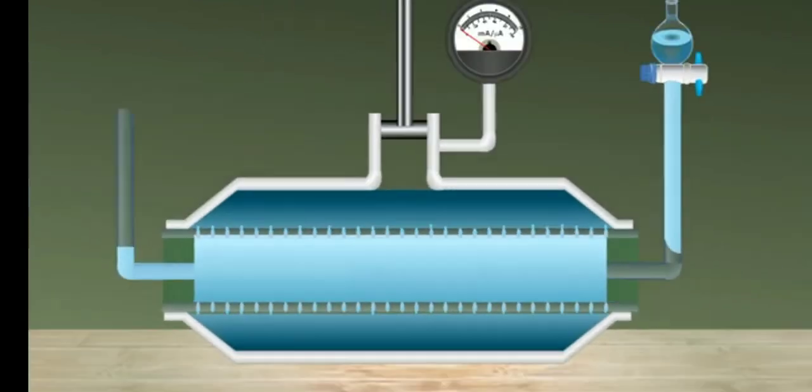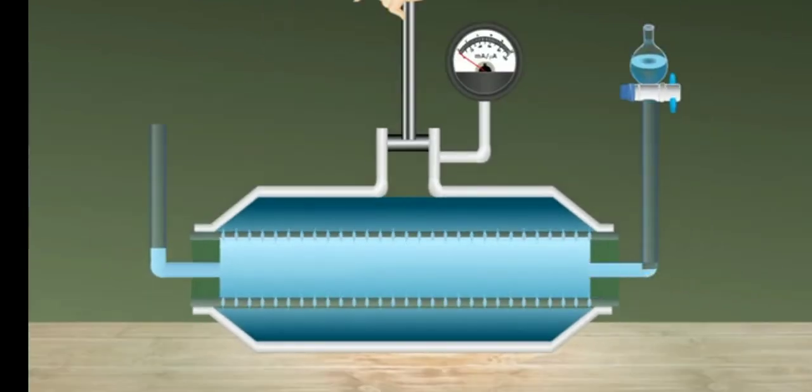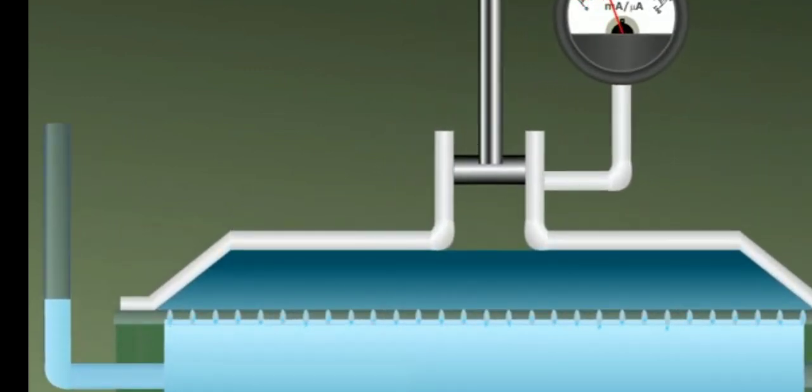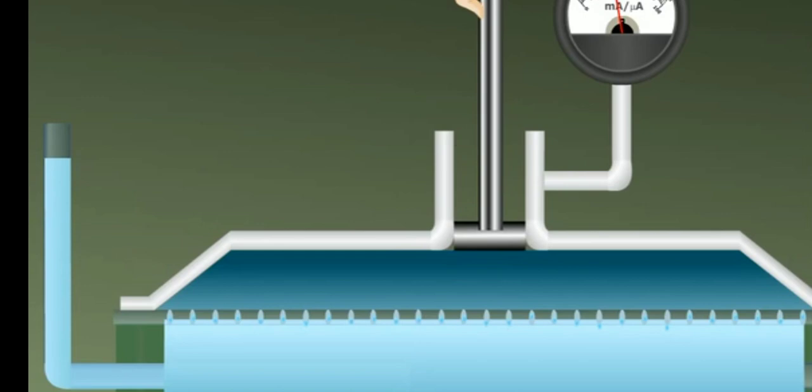In the meantime, flow of water from porous cell to the solution chamber continues. Now, external pressure is applied on the piston so that the water level in the capillary indicator tube remains constant.